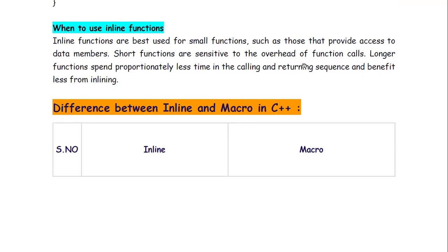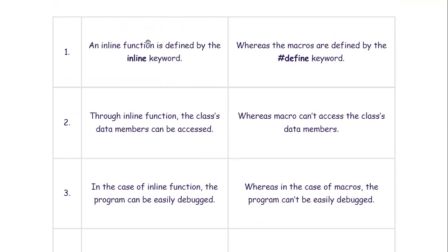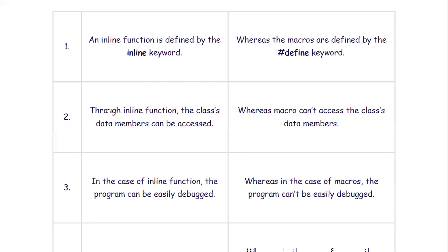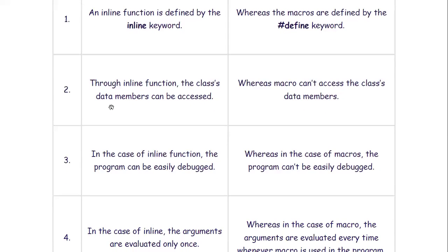Let's come to the final point of discussion in this class, that is what are the differences between inline and macro. Inline function we define with inline keyword, macro is defined with hash define. For inline function the class data can be accessed, whereas macro cannot access the class data member.